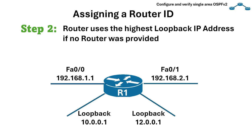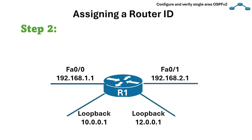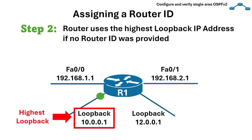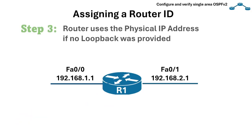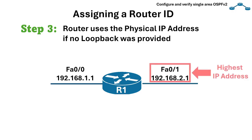If no router ID is explicitly provided, we move on to step 2. The router tries to use the highest loopback IP address that is not in the admin shutdown state. If no loopback interfaces are configured, we move on to step 3, which is when the router selects the highest IP address of any active physical interface.